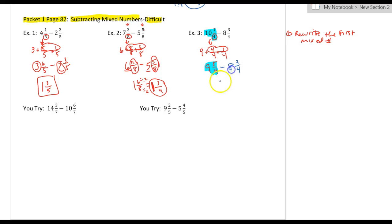So, nine minus eight is one. Five minus three would give me two over four. Can two over four be reduced? Yes. It becomes one, and two divided by two is one, four divided by two is two. So it becomes one and one-half.